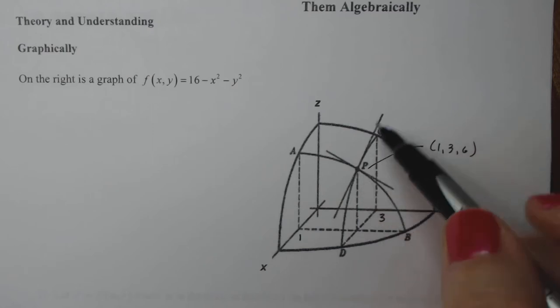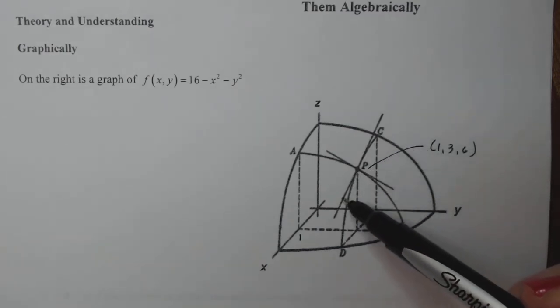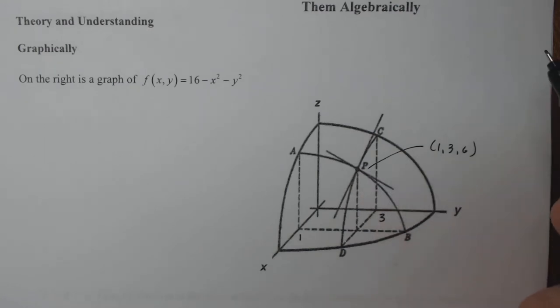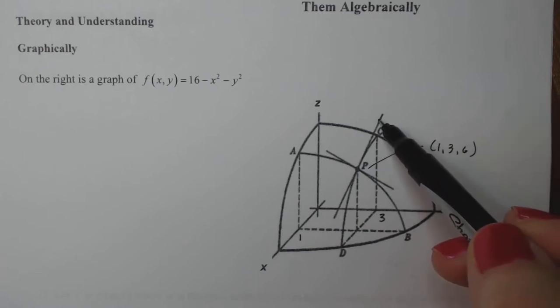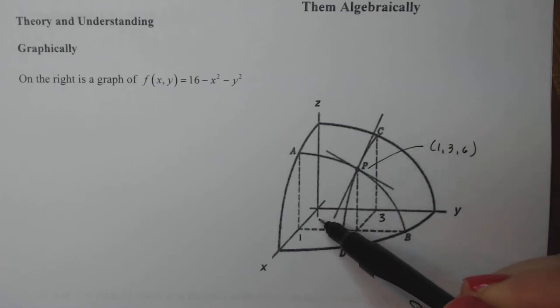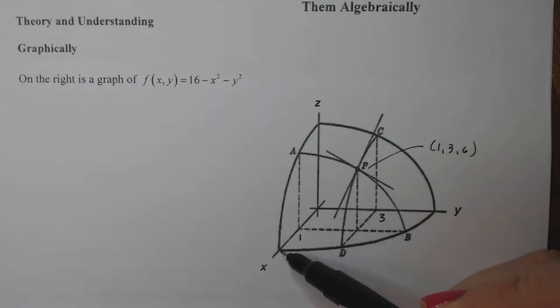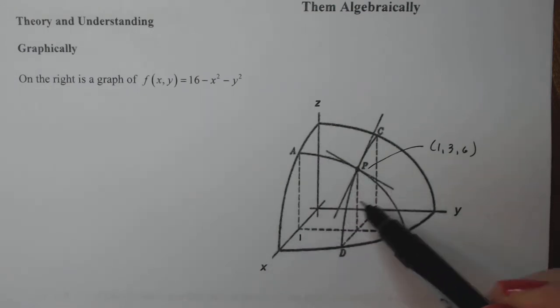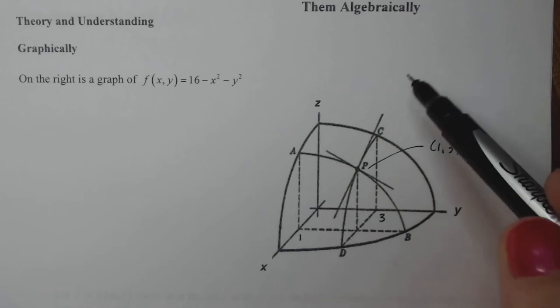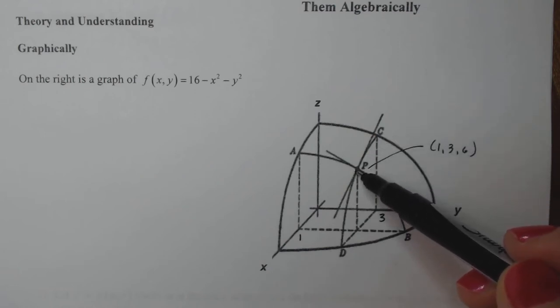Now at the point P, I have two lines that just touch the surface at one point. When you have a line that touches the surface at one point, it's called a tangent line. This tangent line right here is parallel to the x-axis, and this tangent line here is parallel to the y-axis.